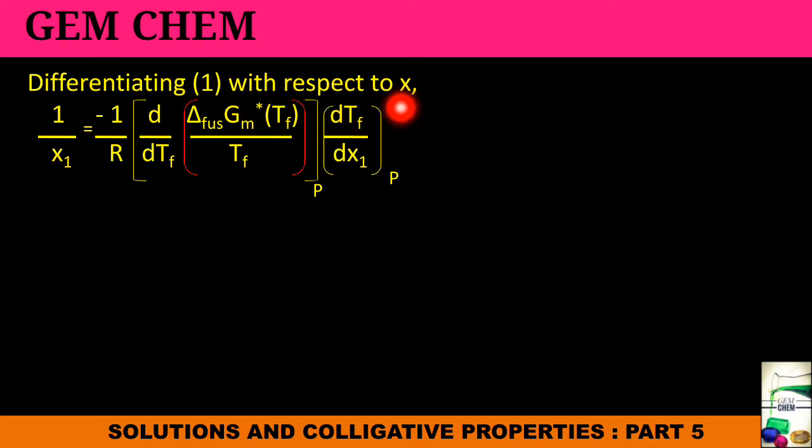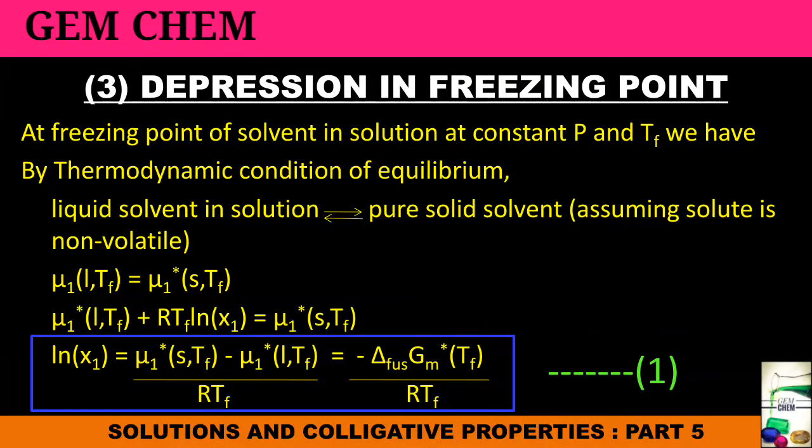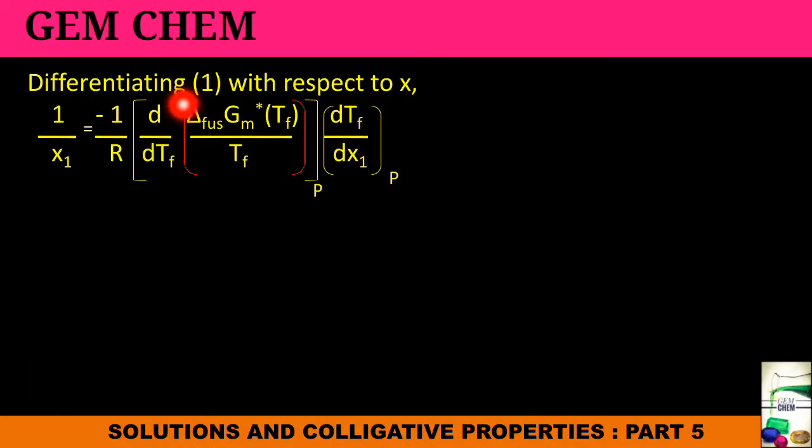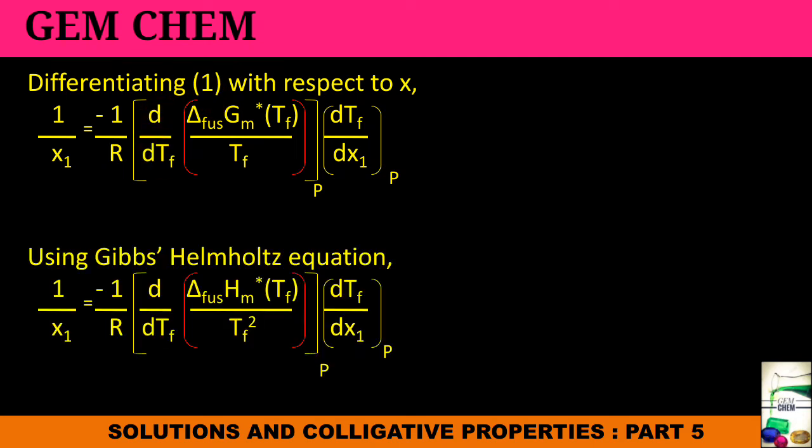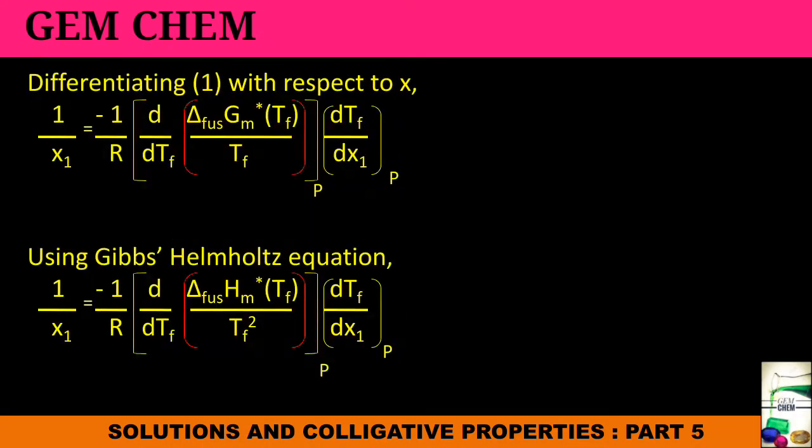Next, we differentiate the equation 1 with respect to X to get this kind of expression. This is our equation 1 and we differentiate this one to get this equation. Next we know that Gibbs-Helmholtz equation shows that this is equal to Delta H fuse by TF square, so we have just done a mere substitution.